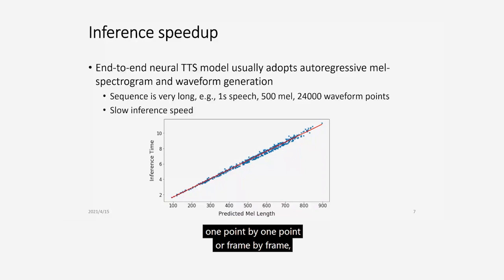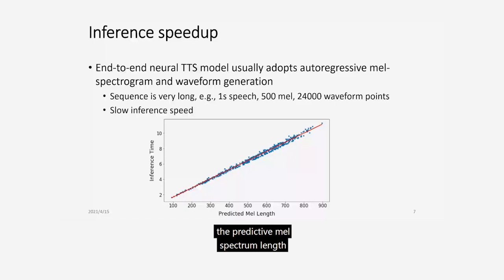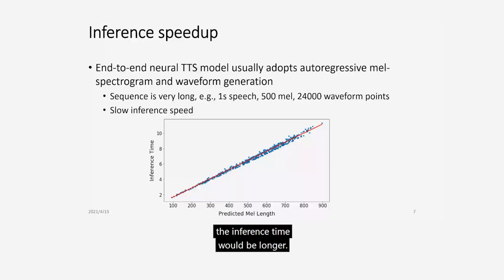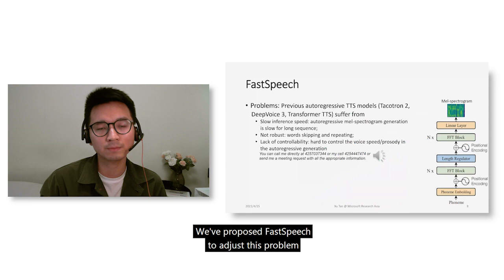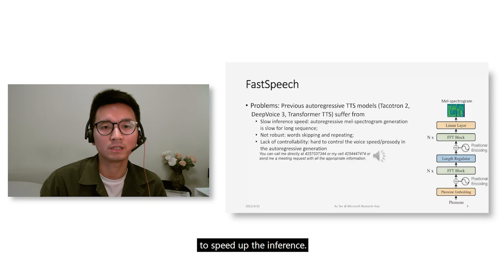As shown in this figure, the relationship between the predicted mel spectrum length and inference time is linear — if you have a longer sequence, the inference time will be longer. This is a fundamental problem that motivated us to propose FastSpeech to address this issue and speed up inference.